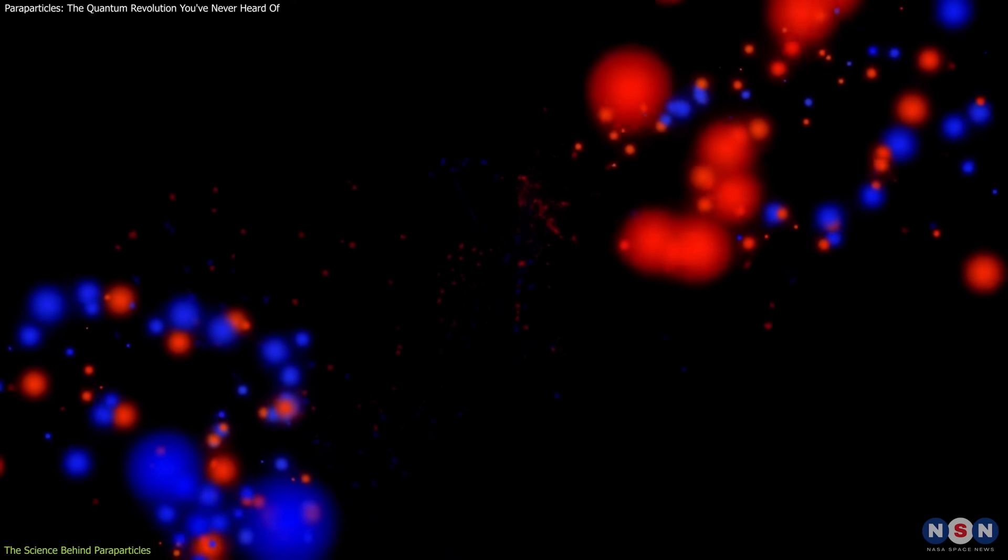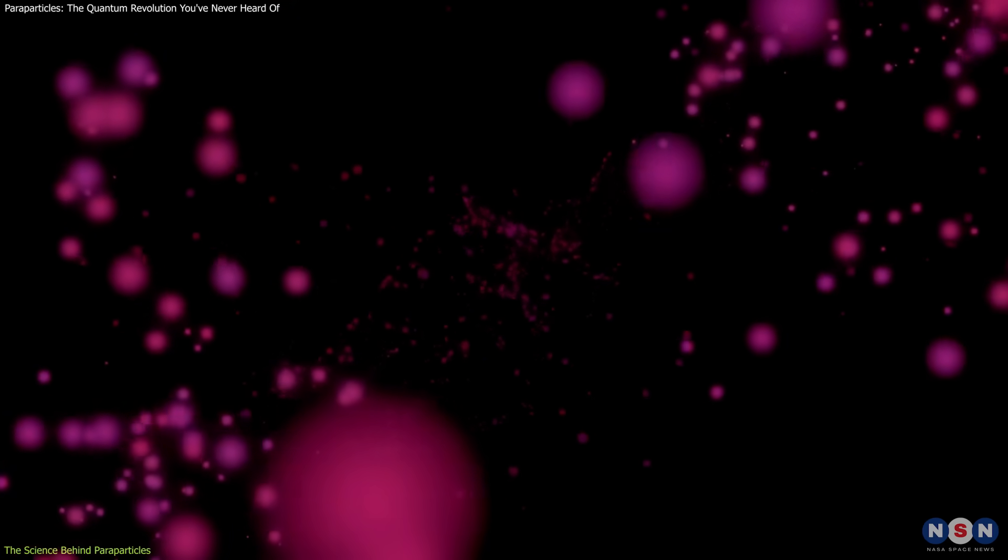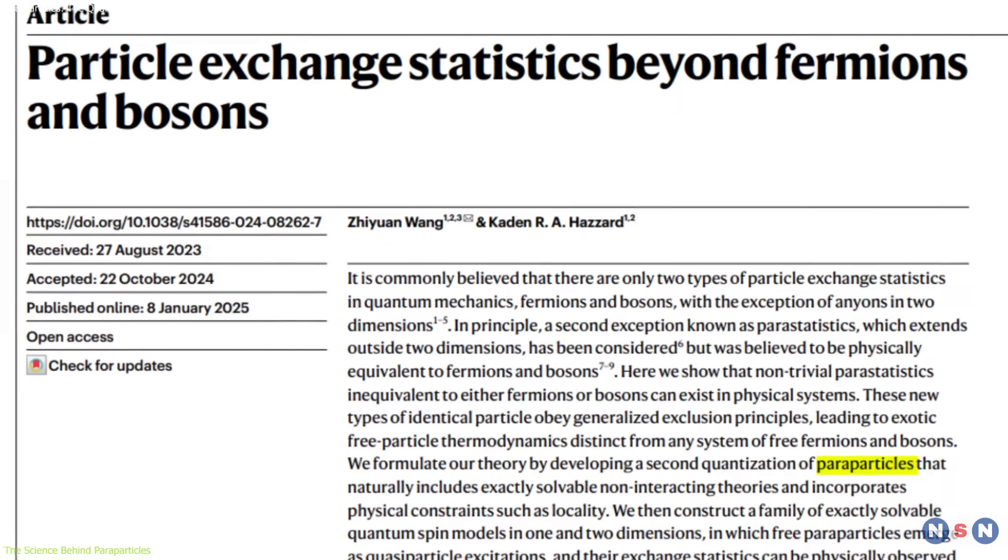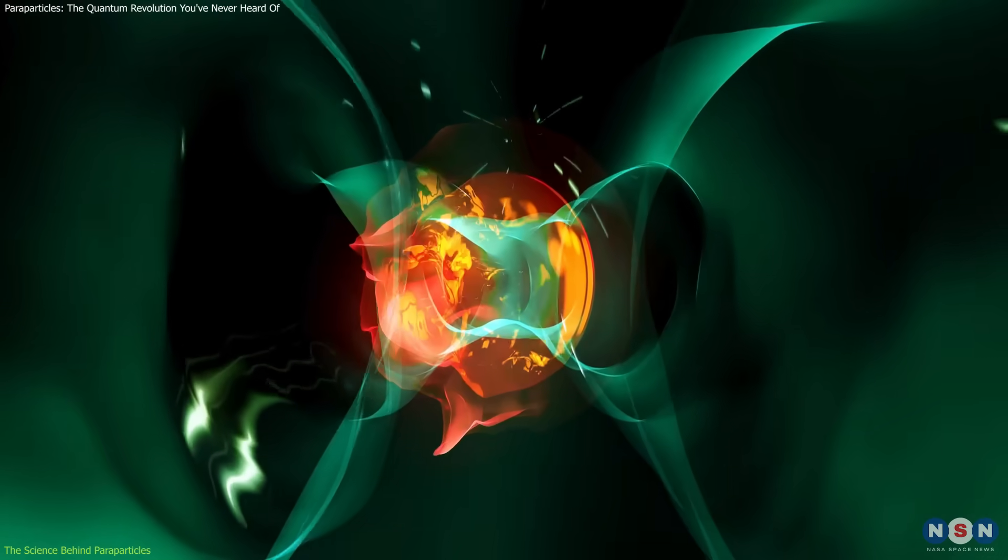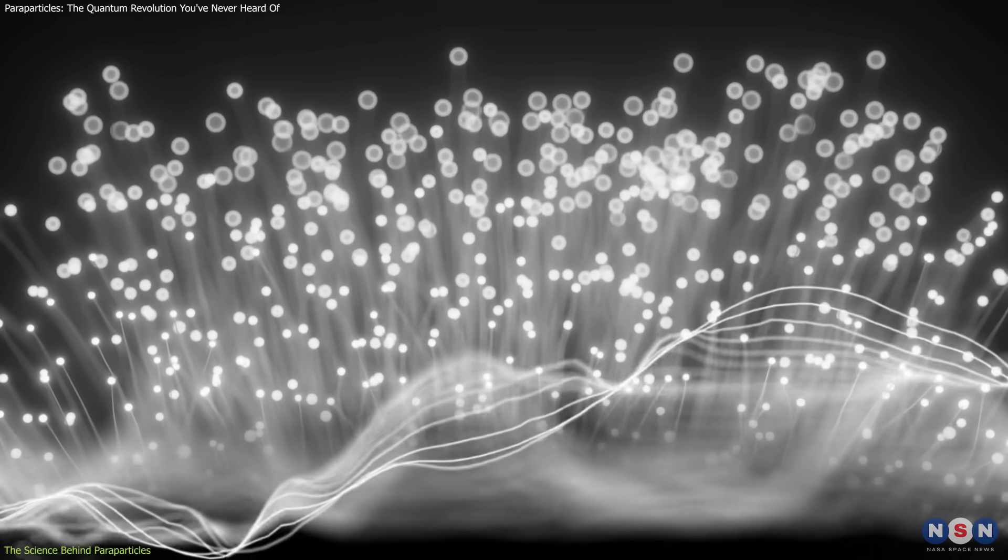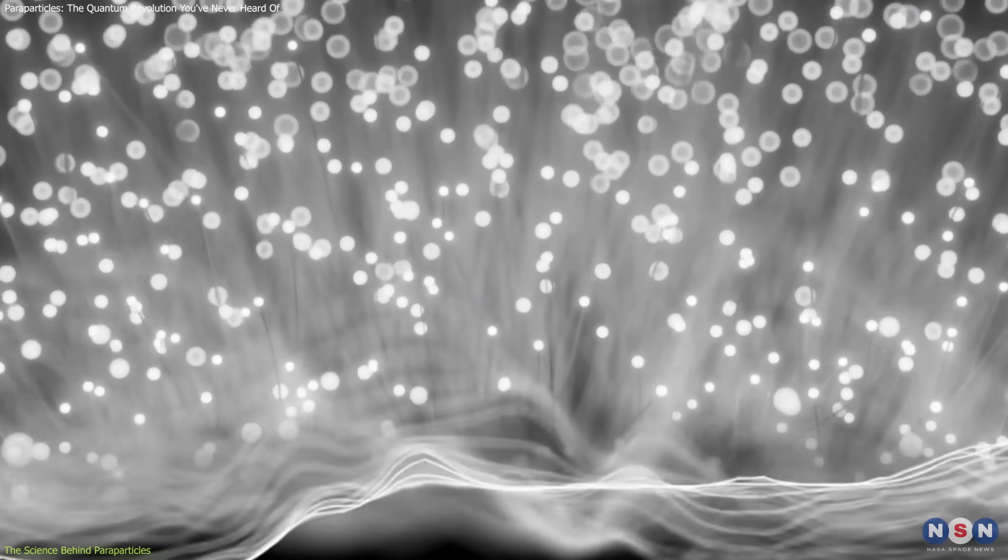What they found was groundbreaking. Under the right conditions, particles could behave in ways that don't fit into the boson or fermion categories. These are the paraparticles. Here's where it gets really intriguing. Paraparticles don't just exist in the traditional sense. They emerge as excitations in materials, like vibrations or magnetic ripples.